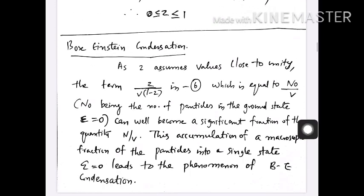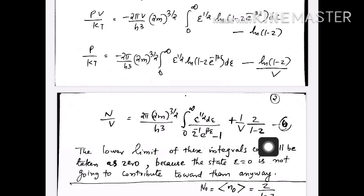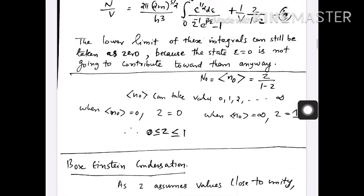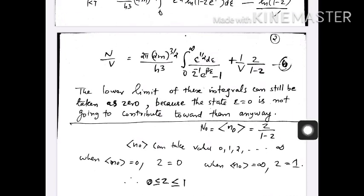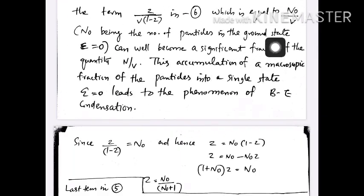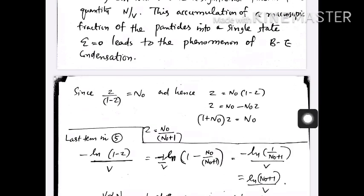One can explain Bose-Einstein condensation from this relation. This is the equation for the total number of particles in the system. As z tends to 1, the ground state term becomes infinite, so a large fraction of particles accumulate in the single particle state of energy epsilon equal to 0. This accumulation and crowding is called Bose-Einstein condensation, and we will learn more about it later.